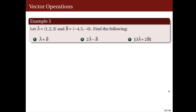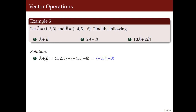Let's look at some examples. Given vector a = (1, 2, 3) and vector b = (−4, 5, −6), let us find a + b. The sum a + b is a vector whose components are the sums of corresponding components: 1 + (−4) = −3, 2 + 5 = 7, and 3 + (−6) = −3. So a + b = (−3, 7, −3).